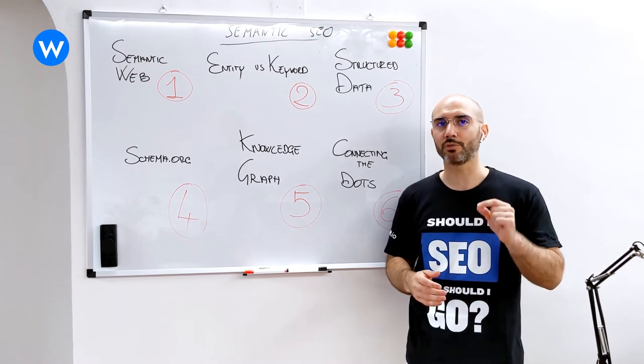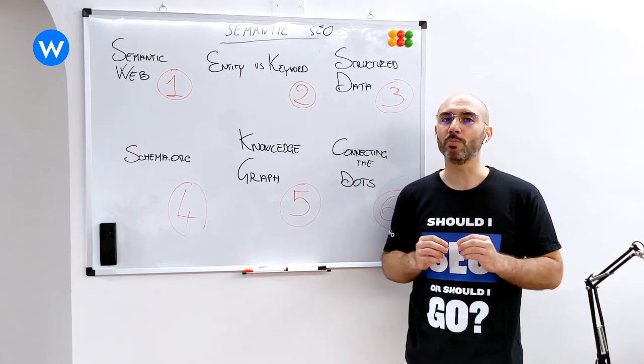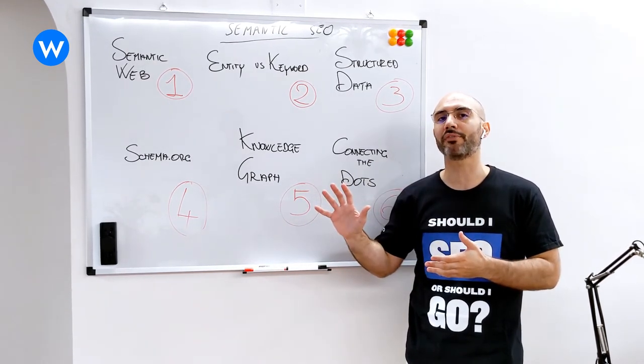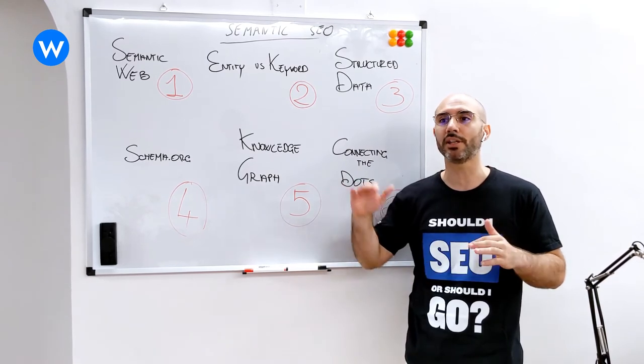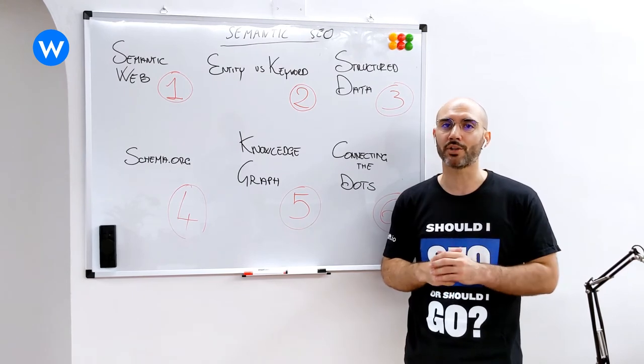And actually Google started to build its knowledge graph in 2012. Now, we wanted to enable companies to build their knowledge graph, and this is very important because if Google can use the knowledge graph technology, that doesn't mean that only giants or tech companies can use it. You can use it also to power up your SEO strategy.